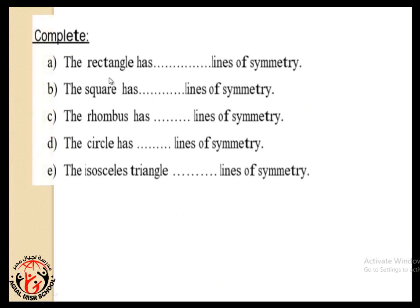And now complete with me. The rectangle has how many lines of symmetry? Yeah, two lines of symmetry. Number B. The square has how many lines? Yeah, four. Excellent.